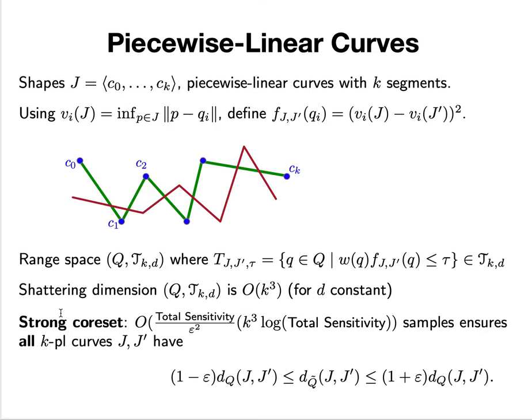This defines a subset of R^d and defines a range space over Q for any pair of shapes. We can show the shattering dimension, roughly like the VC dimension, is K³ for any constant d.